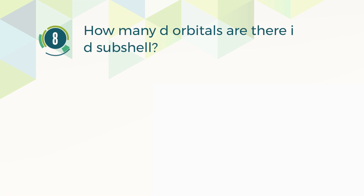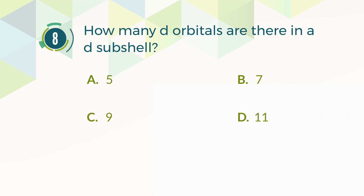Number 8. How many D orbitals are there in a D subshell? A. 5. B. 7. C. 9. D. 11.